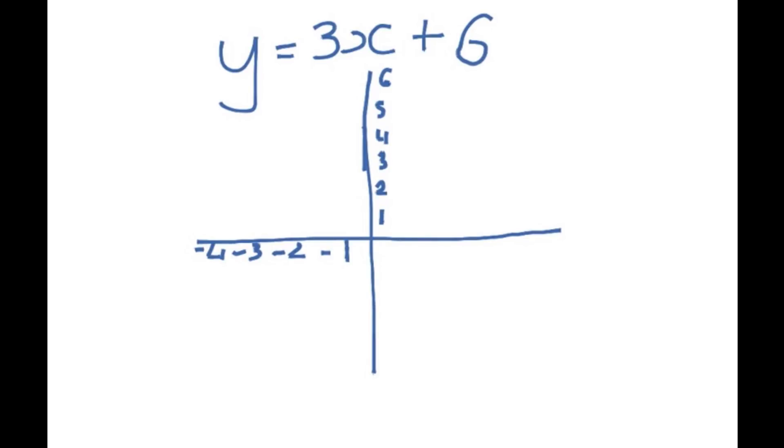First of all, we know the 6 represents the y-intercept, so this is where it crosses the y-axis. And we know the 3 represents the gradient, or the steepness of the curve. And to find what the x-intercept is, I'm going to show you how you do that.